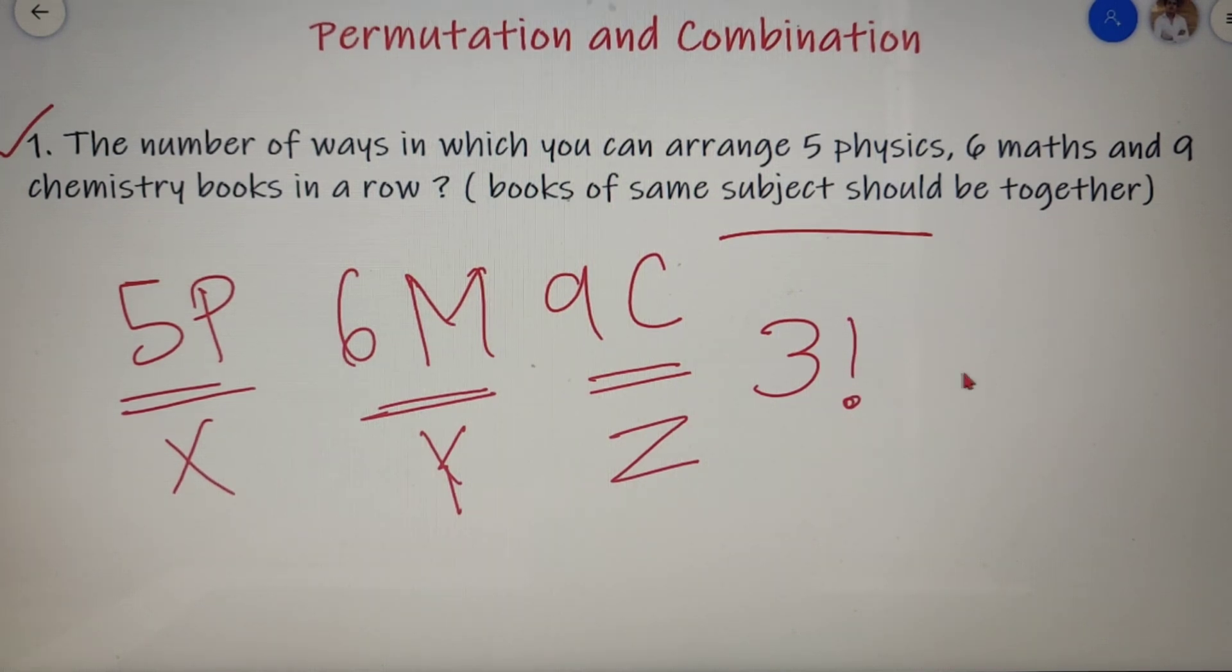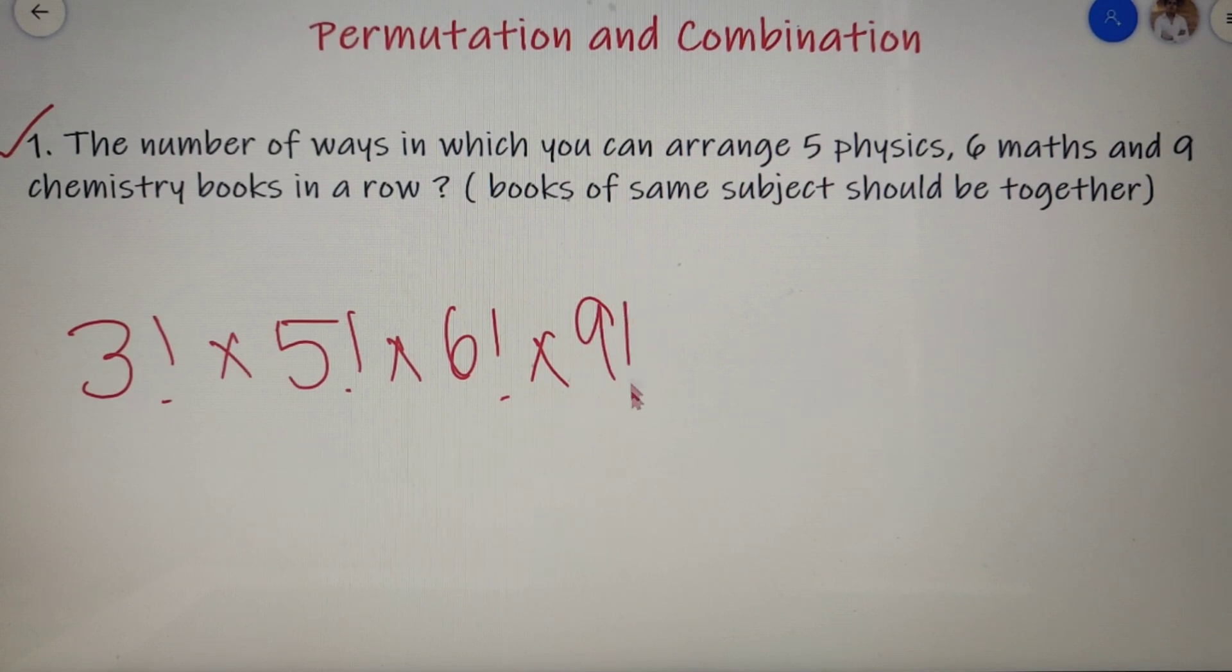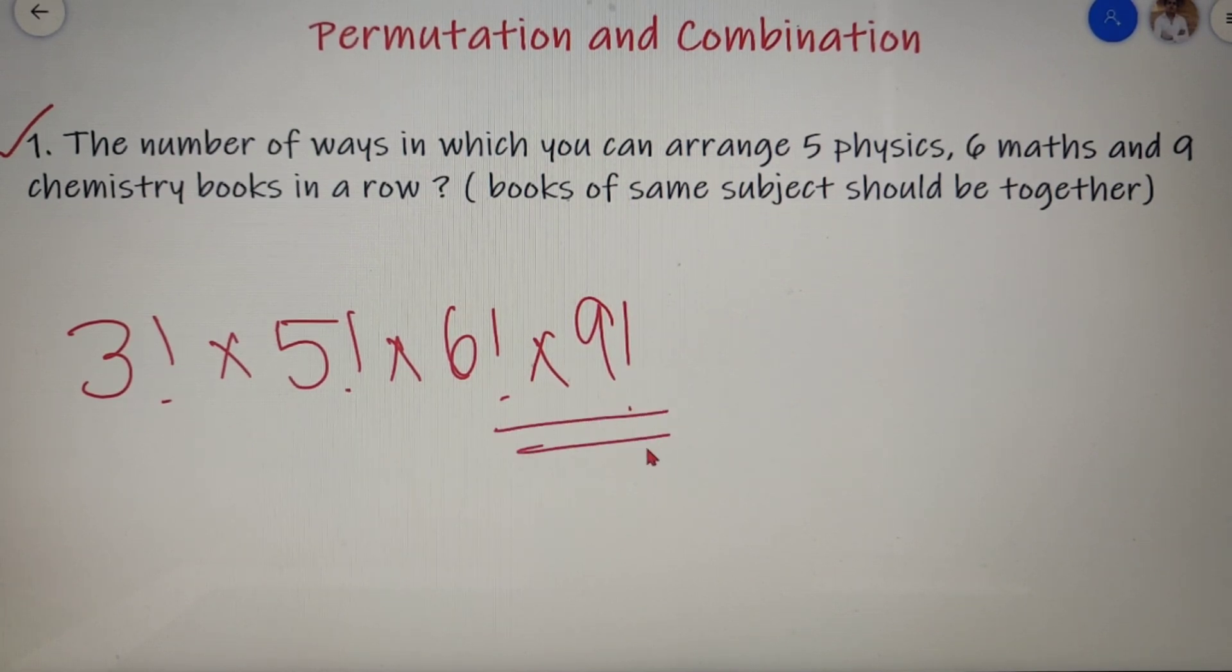Our answer is not yet complete. I can arrange the 5 physics books in 5 factorial ways, the 6 maths books in 6 factorial ways, and same for the 9 chemistry books, I can arrange them in 9 factorial ways. So our final answer would be 3 factorial into 5 factorial into 6 factorial into 9 factorial. So this is our final answer.